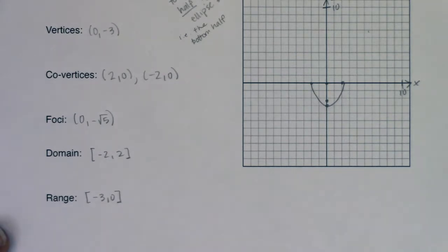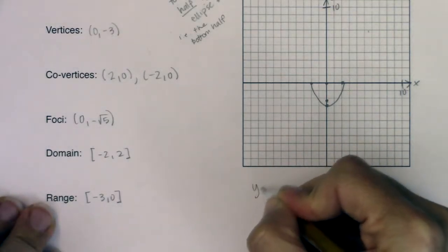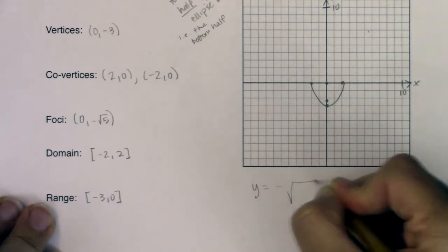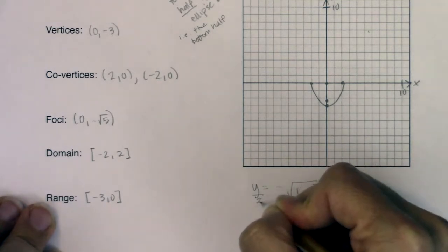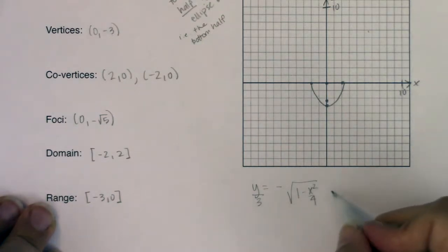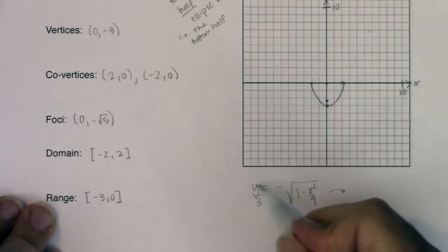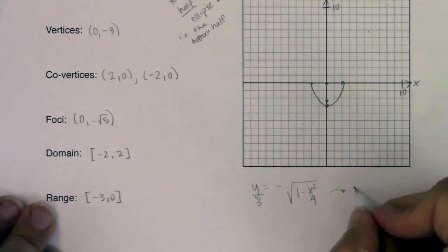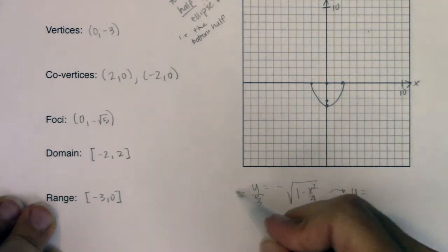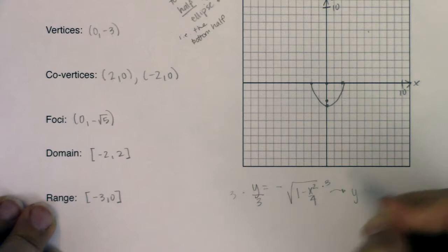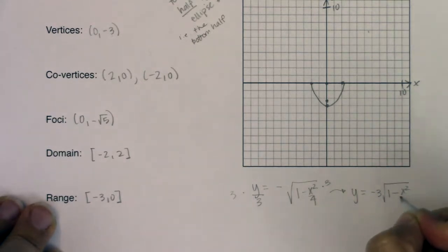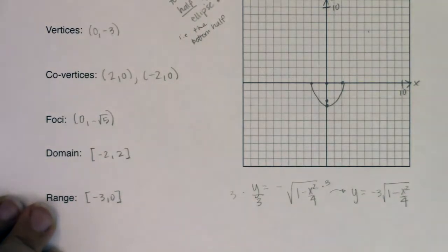Now, if you wanted to plug this into your calculator, you could. You'd have to do a little bit more algebraic manipulation. And here's what I mean. Right now, we have y over 3 equaling negative square root of 1 minus x squared over 4. If you want to get this into your graphing calculator, you need to get y all by itself. So I'm going to multiply both sides by 3, and that will get rid of the fractions. So ultimately, I have negative 3 root 1 minus x squared over 4. So let me go plug this into y1.